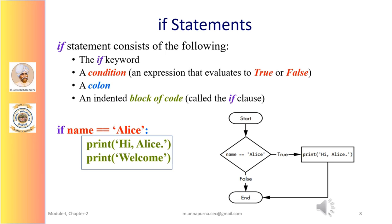Let us take an example. Observe the following code that checks to see whether the user's name is Alice. All flow control statements end with a colon and are followed by a new block of code, or the clause. The if statement's clause is a block with 'print hi Alice' and 'print welcome'.